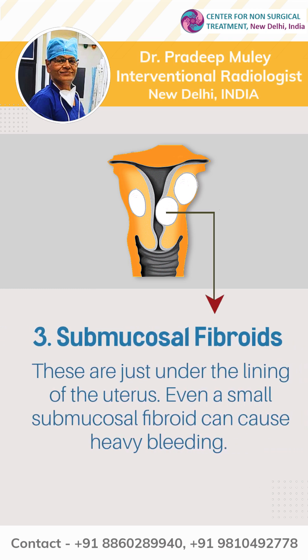Submucosal fibroids: These are just under the lining of the uterus. Even a small submucosal fibroid can cause heavy bleeding.